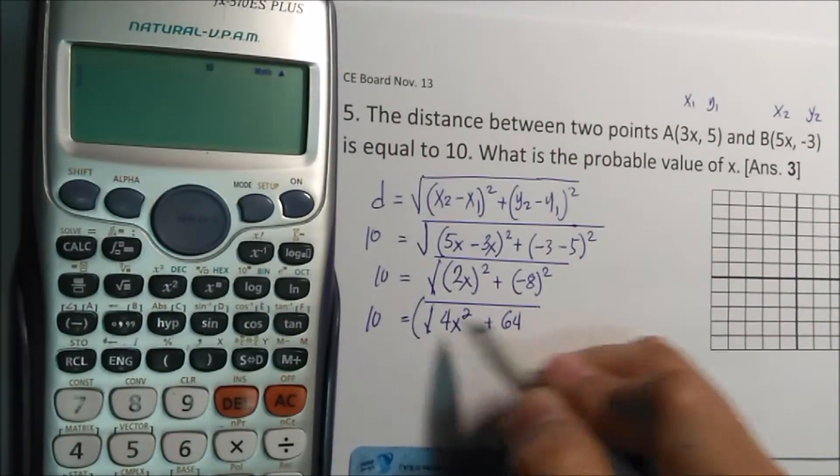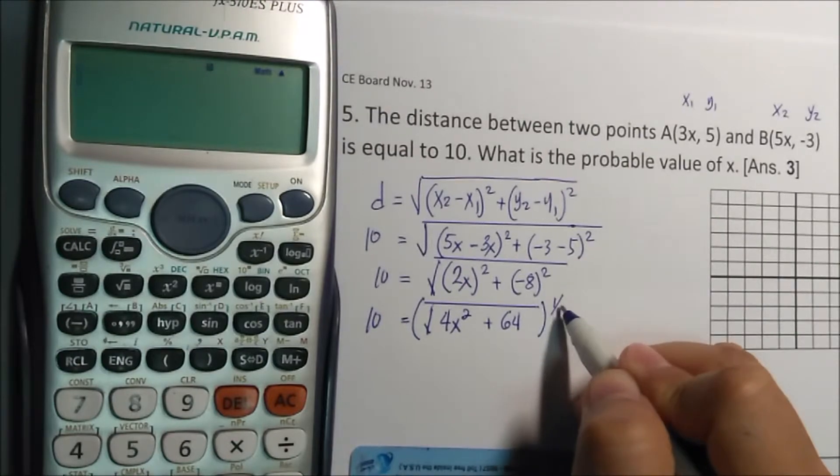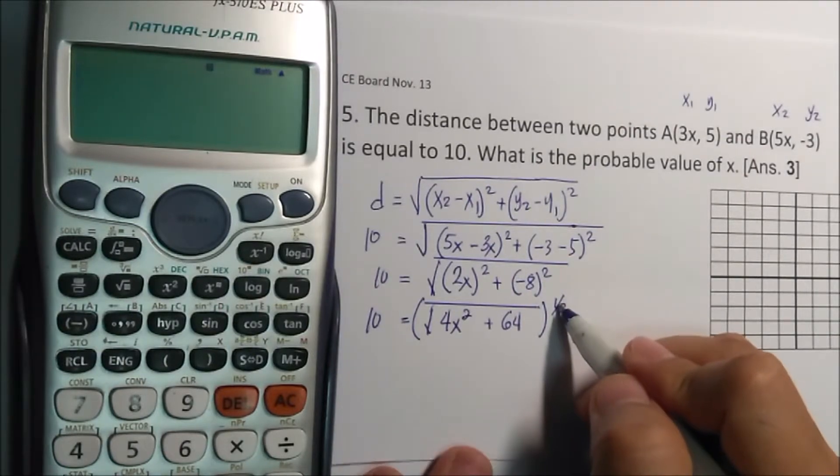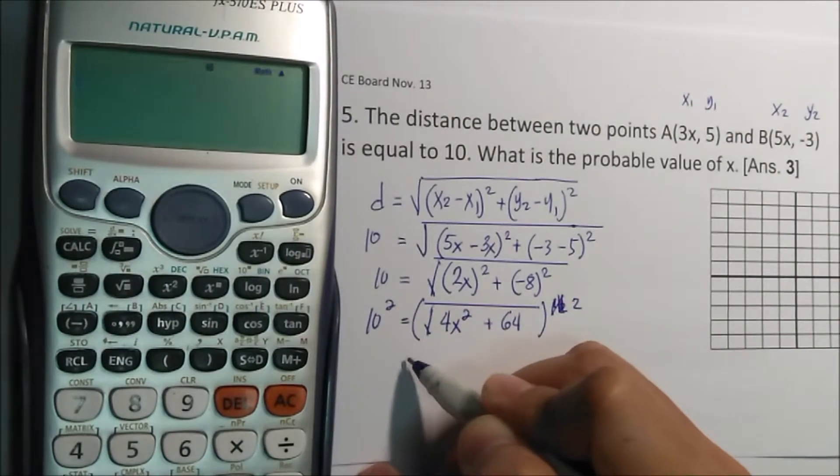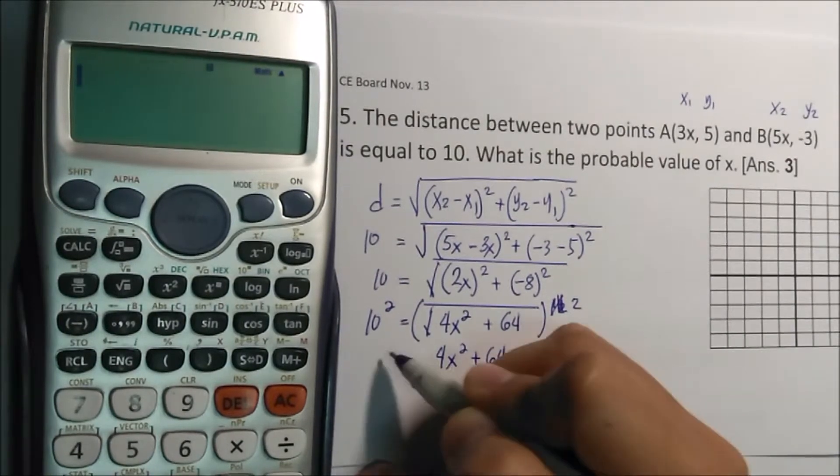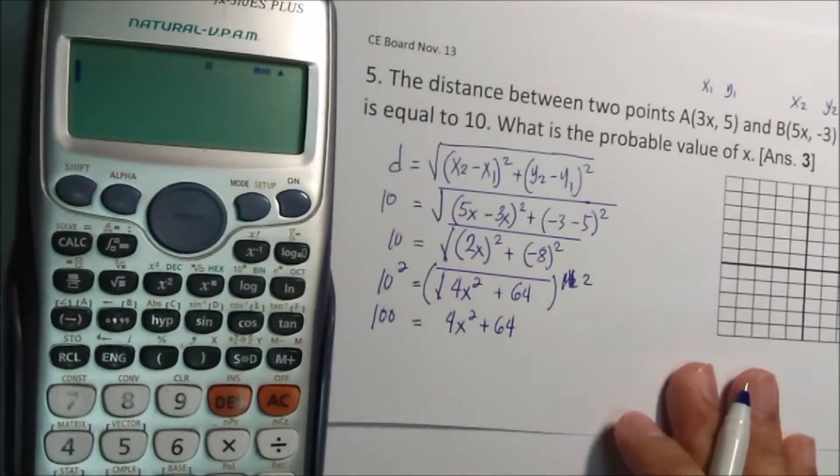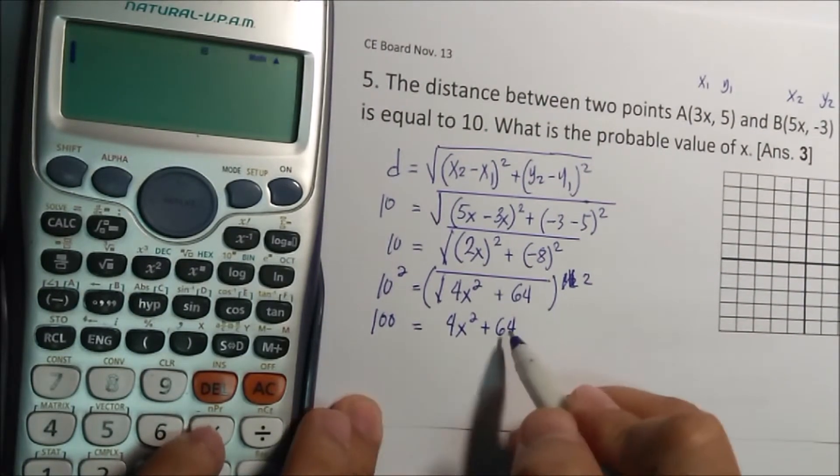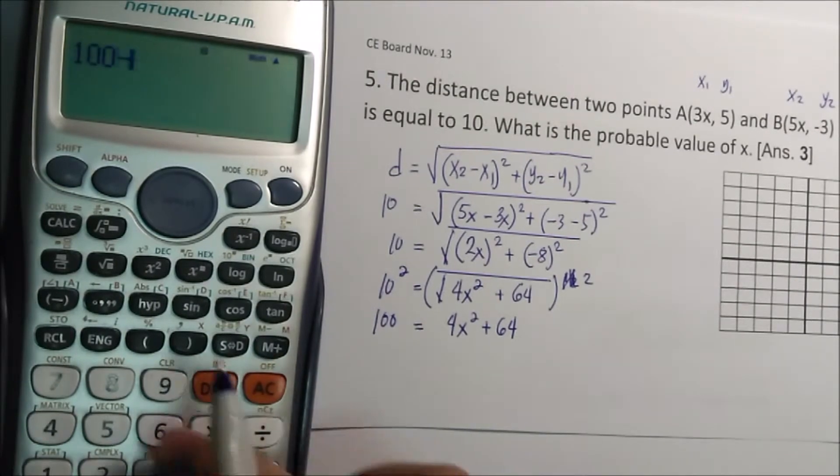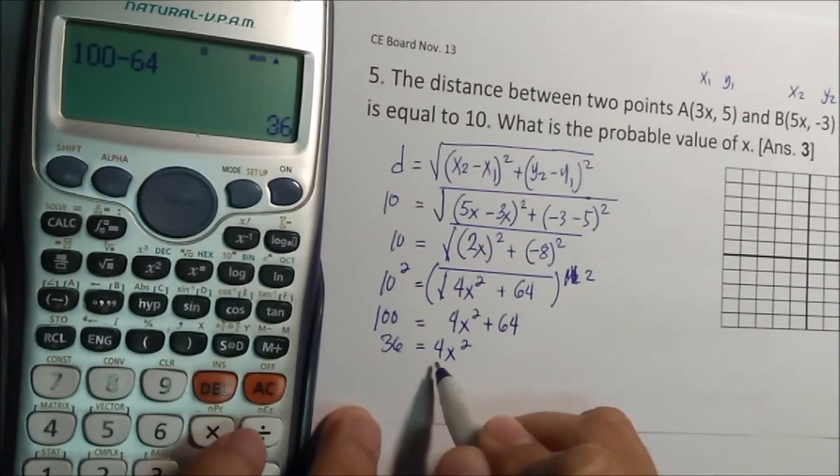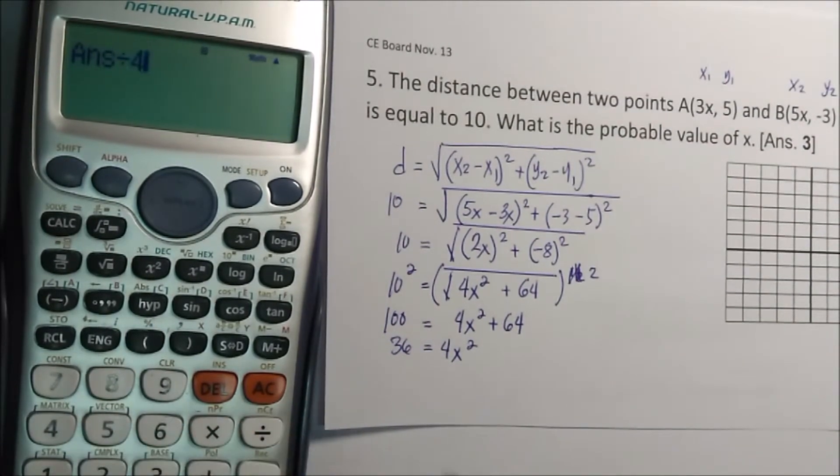Now we will remove the square root, so I multiply by raised to 2. So this will become 4x squared plus 64, and this is 100. Now 100 minus 64, that is 36, 4x squared. Divided by 4, 9.